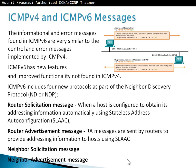First is the Router Solicitation message. When a host is configured to obtain its address information automatically using Stateless Address Auto-Configuration, or SLAAC, it will send a Router Solicitation message — for the first 64 bits it needs a prefix. The Router Advertisement message is sent by a router to provide addressing information to hosts using SLAAC. Then we have Neighbor Solicitation and Neighbor Advertisement messages.